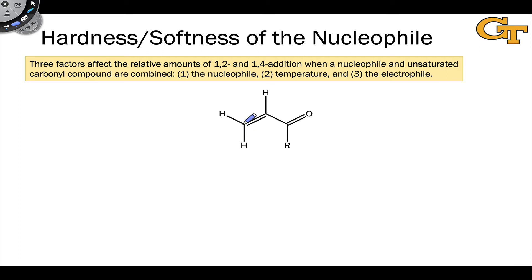Alpha-beta unsaturated carbonyl compounds contain two electrophilic sites: the carbonyl carbon and the beta carbon. Nucleophilic addition can occur at either of these sites to give the products of 1,2 or 1,4 addition, or direct or conjugate addition.